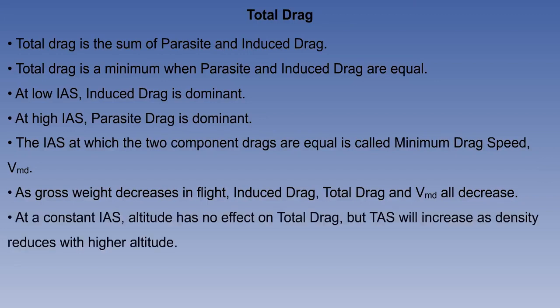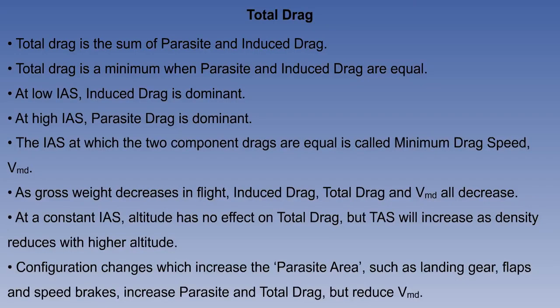At a constant IAS, altitude has no effect on total drag, but TAS will increase as density reduces with higher altitude. Configuration changes which increase the parasite area, such as landing gear, flaps and speed brakes, increase parasite and total drag, but reduce VMD.